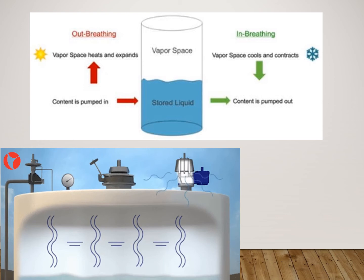Liquid is stored in the storage tank with vapor space above it. As the sun rises in the morning, the vapor space inside the storage tank naturally gets heated up, causing the pressure inside the tank to build. The pressure side of the breather vent begins to open, relieving the pressure to a safe level. As the liquid level begins to fill the tank, pressure will increase, and the pressure side of the vent opens to relieve it.